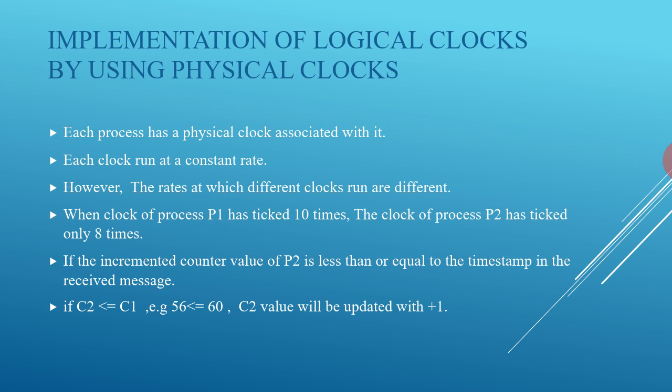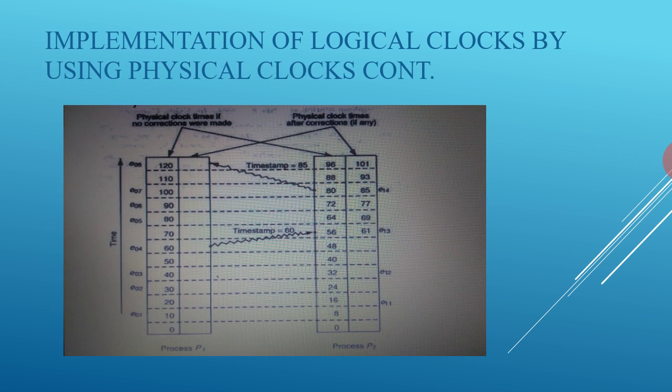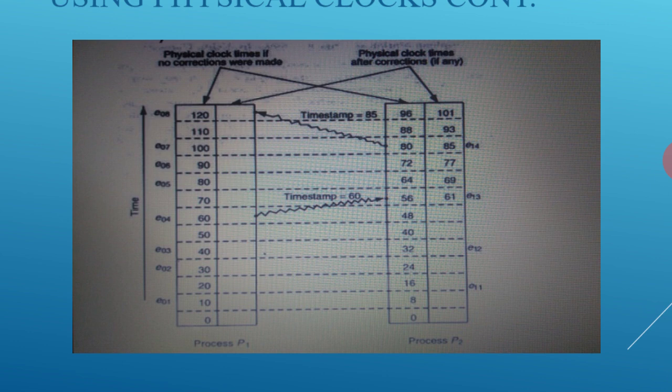Implementation of logical clocks using physical clocks: each process has a physical clock associated with it. Each clock runs at a constant rate, however the rates differ across processes — for example, when the clock of P1 has ticked 10 times, the clock of P2 has ticked only 8 times. If the incremented counter value of P2 is less than or equal to the timestamp in the received message (e.g., C2 ≤ C1, such as 56 ≤ 60), C2 is updated with plus one. Here is the diagram for this example.